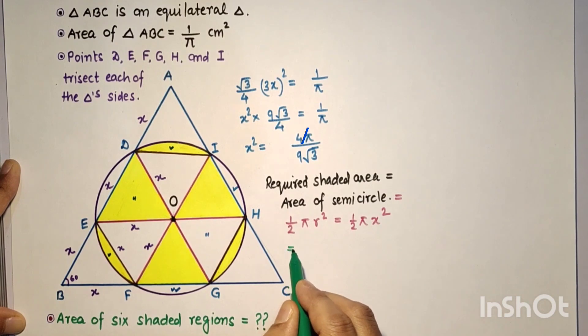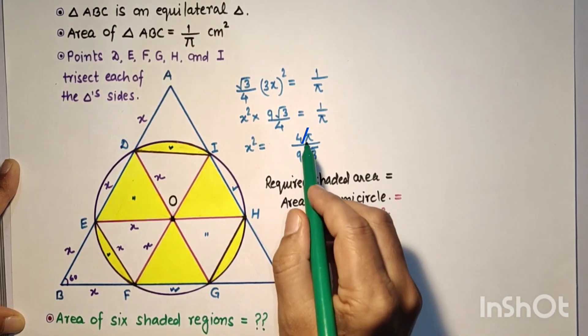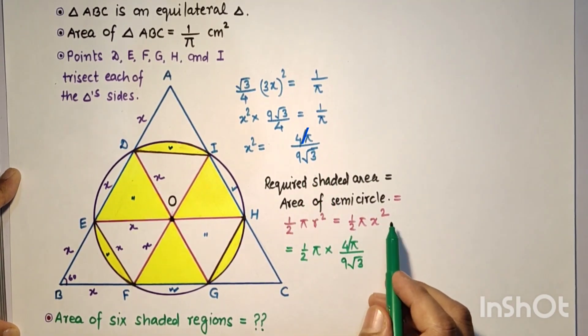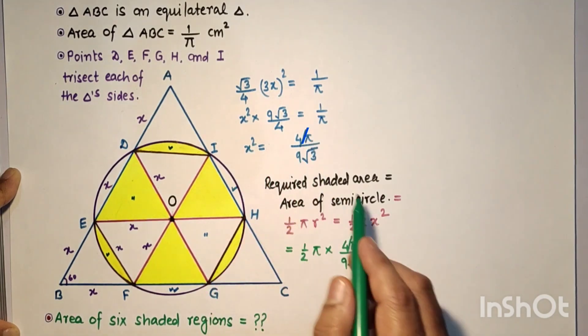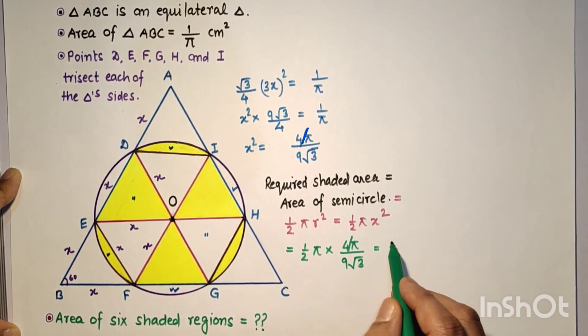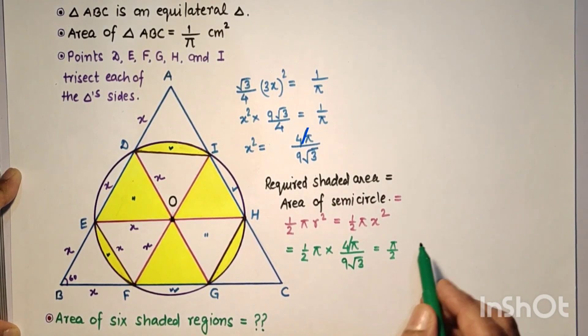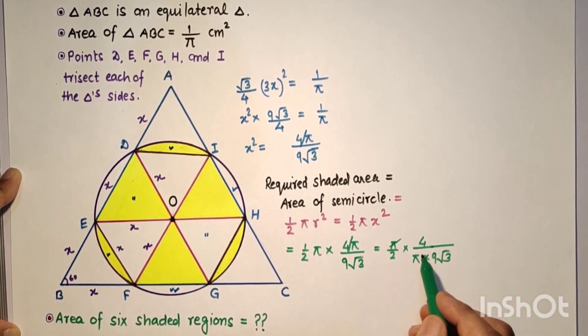So required area equals (1/2)π × X². Substituting X² as 4/(9√3π), we get (1/2)π × 4/(9√3π) = 2/(9√3).